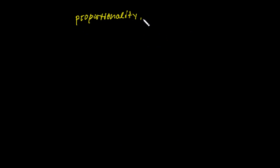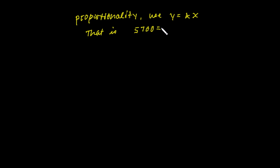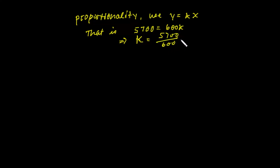To find the constant of proportionality, use y equals k times x. The value of y is 5,700, which equals 600 times k. Dividing both sides by 600, k equals 5,700 over 600, which is 57 over 6, which is about 9.5.